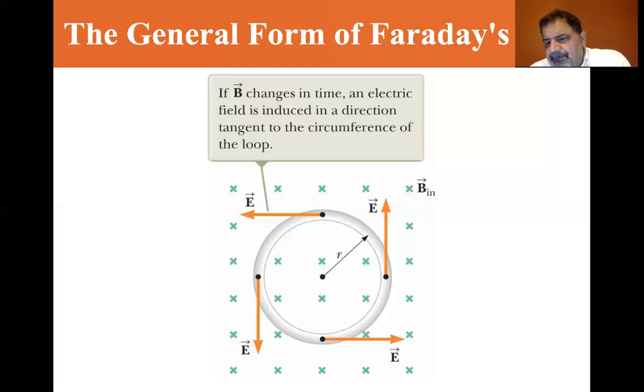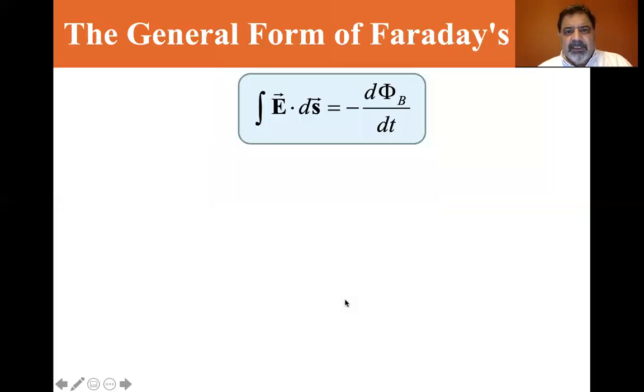Now let's look at the equation. Faraday's law is EMF equals minus dΦ_B/dt. The changing magnetic field causes the EMF, but the EMF is the integral of E·ds, where E is the electric field in this case.